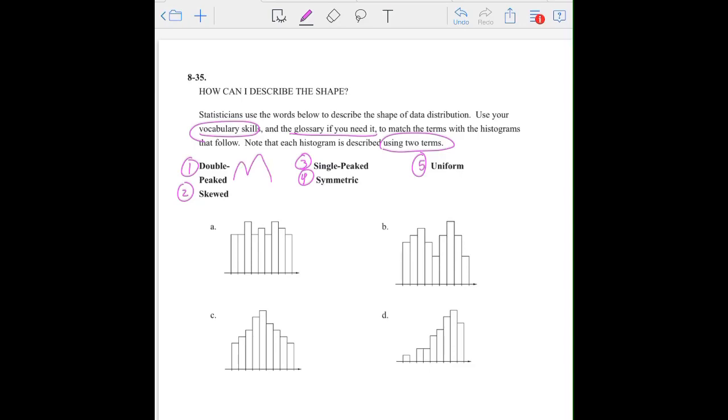The first one is a double peak. So I like to think about two mountains. That's my mountain. Skewed, I mean, something is like pushed to one side. And then single peak is just one mountain. Symmetric means it's pretty even on both sides. I don't think I could draw a picture for that. Or the word uniform. Uniform means it's even from left to right. So it's uniform from left to right. Or I like to think of kids at school that have to wear a uniform. Everybody looks the same.